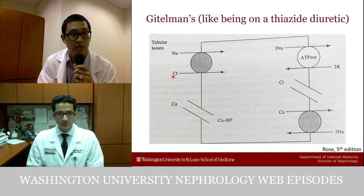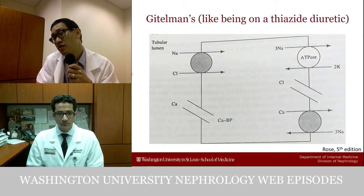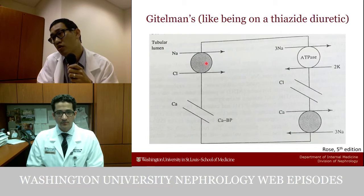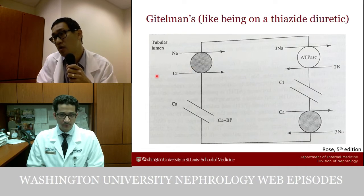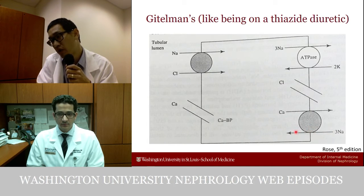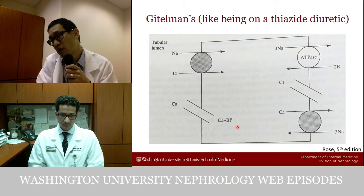In Gitelman's — like a thiazide diuretic — we're in the distal tubule at the sodium-chloride cotransporter. There is a calcium channel in the distal tubule, and blocking the sodium-chloride cotransporter causes sodium to be driven into the cell on the basolateral side in exchange for calcium. As a result of that exchange, calcium enters the cell, which is why a thiazide diuretic leads to hypocalciuria.